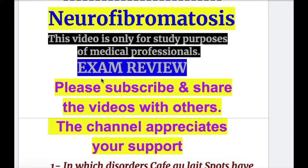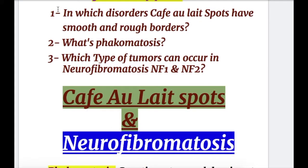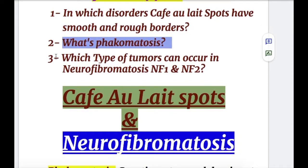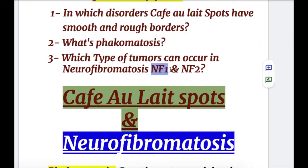In this video, we'll do an exam review on neurofibromatosis and café-au-lait spots. First, a few important exam questions. Question number one: in which disorder do café-au-lait spots have smooth and rough borders? Number two: what is phacomatosis? And number three: which types of tumors can occur in neurofibromatosis 1 (NF1) and NF2? Now let's discuss café-au-lait spots and neurofibromatosis.